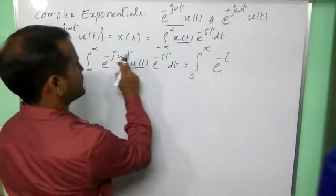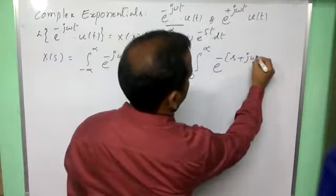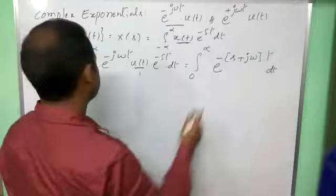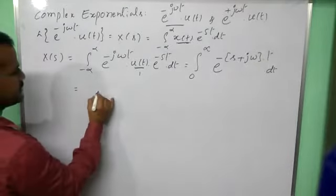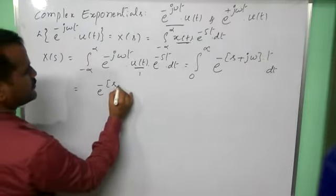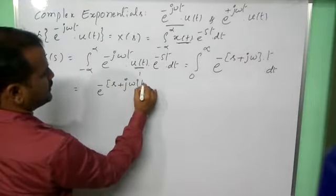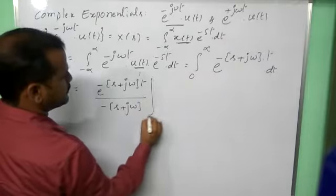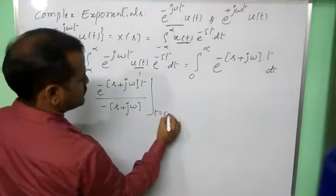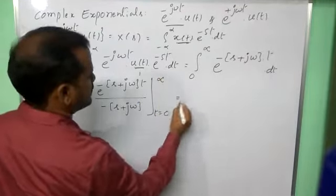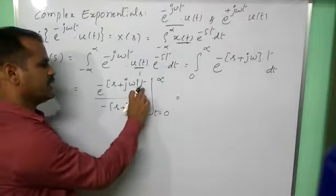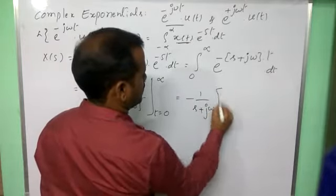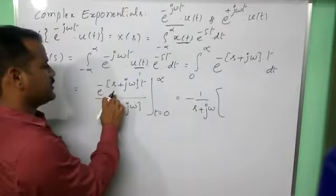So that we can write e^(-(s+jω)t), I am taking common remaining expression s + jω times t, dt. We are getting a single exponential we can easily integrate, that is e^(-(s+jω)t) divided by -(s+jω), so that minus 1 by s + jω and in the numerator e^(-(s+jω)t).